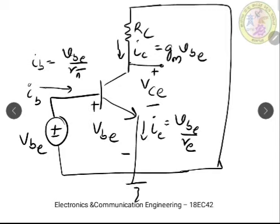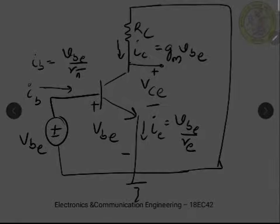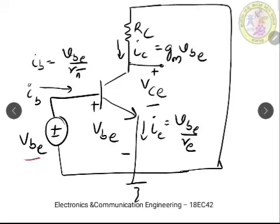The components mentioned in our circuit are: first, Vbe which is the input; then the Vce component; then IC the collector current component; emitter current component IE; and IB the base current component. All of these are going to be included in the hybrid pi model, and with this we are going to draw the complete model.